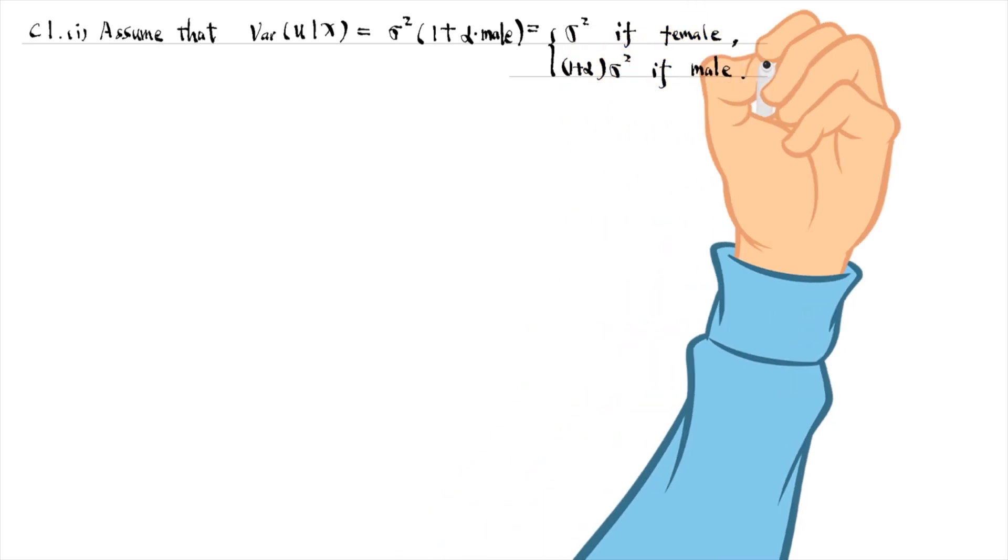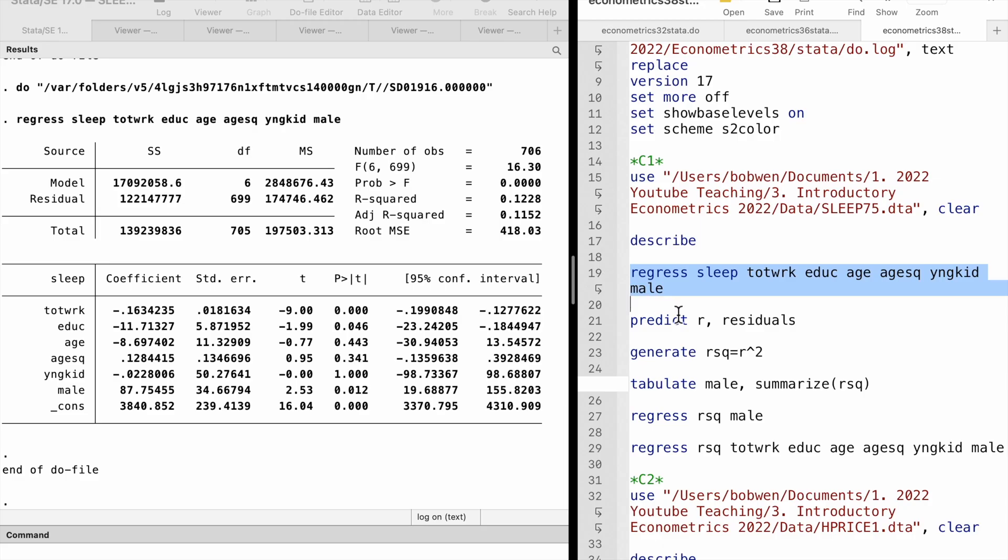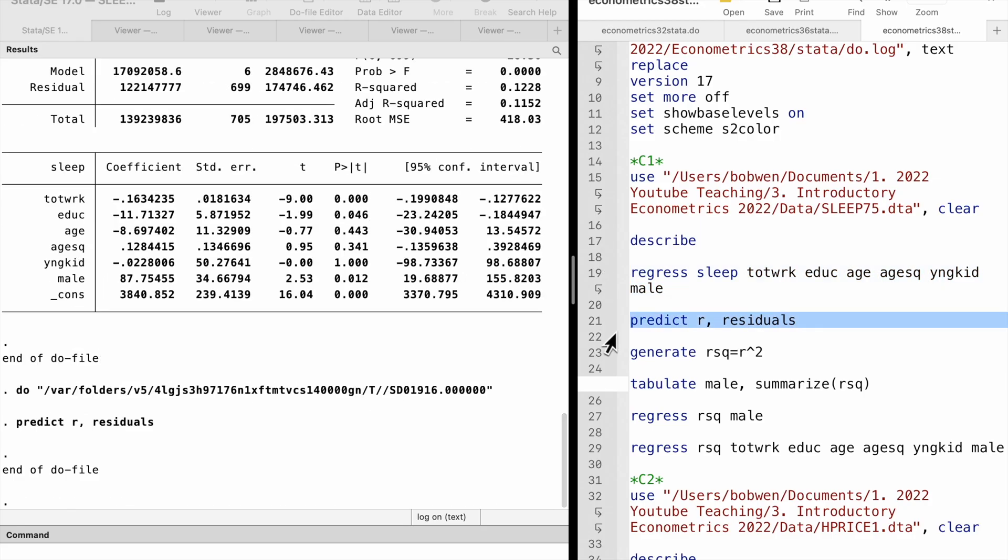For part 2, we estimate the sleep equation by OLS and obtain the OLS residuals. We use the predict command with the residuals option in Stata. I name the residuals R.